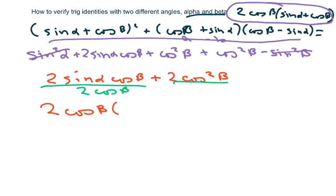The twos will cancel here and we're left with 1 cosine of beta, which is our desired result.